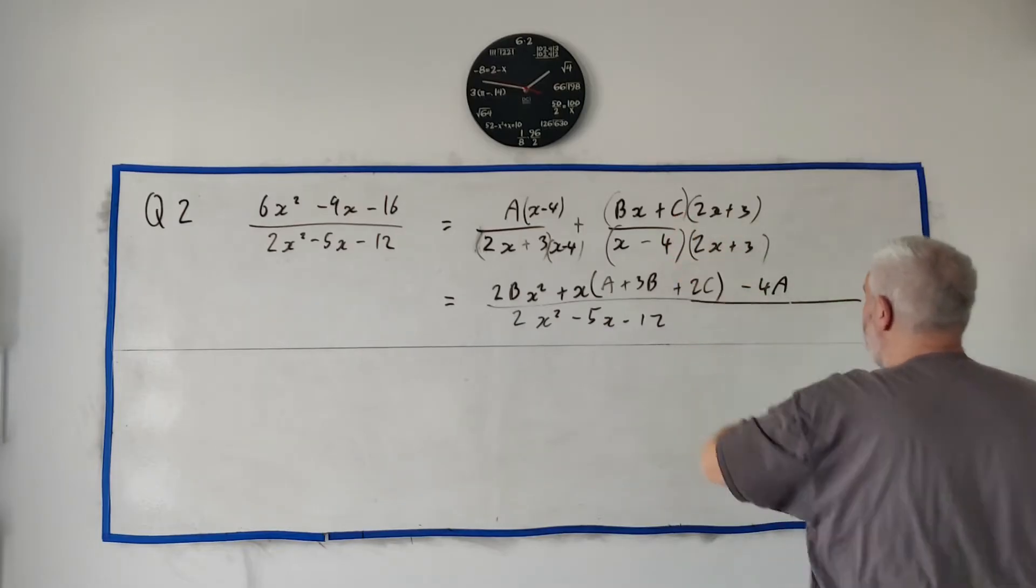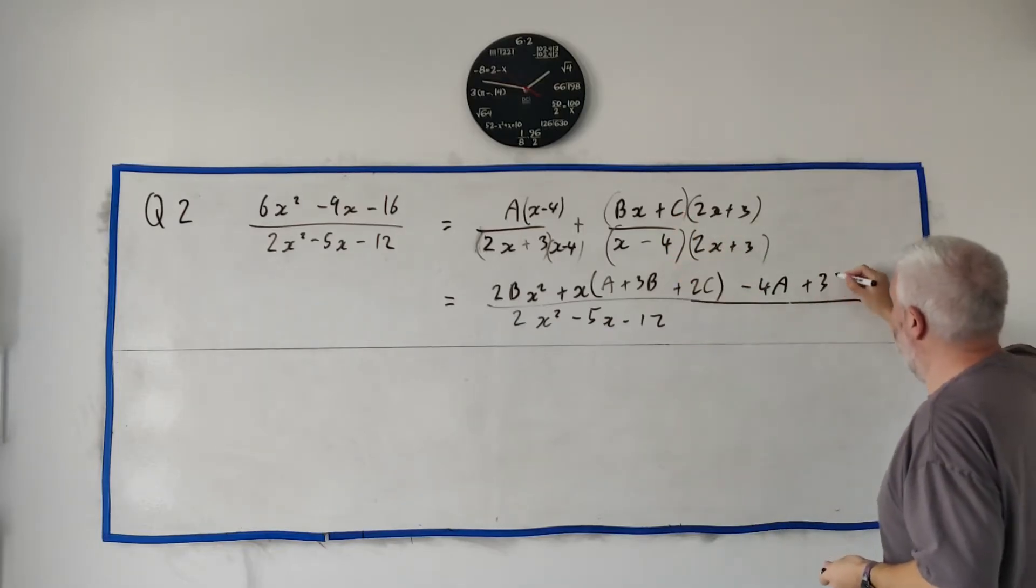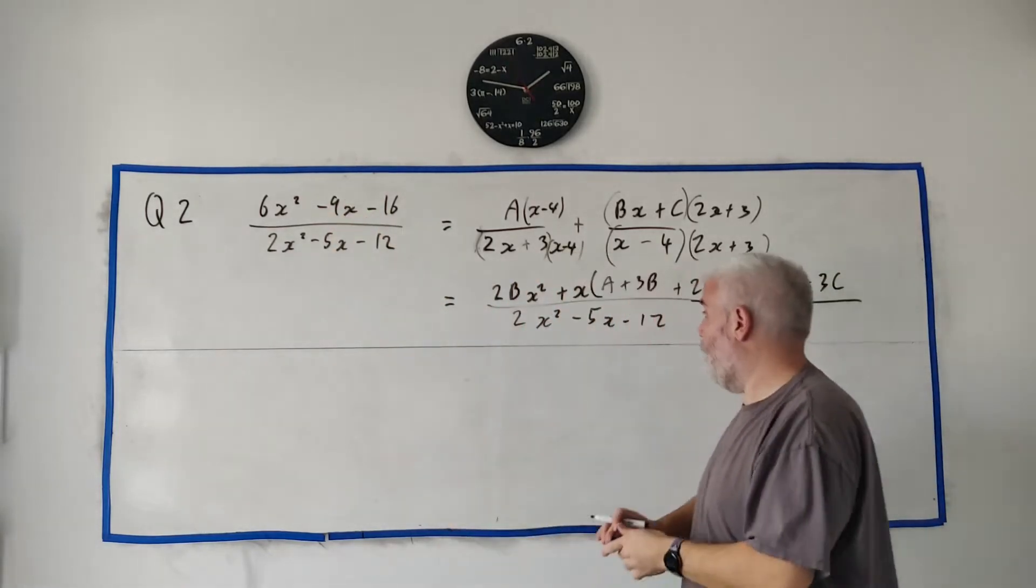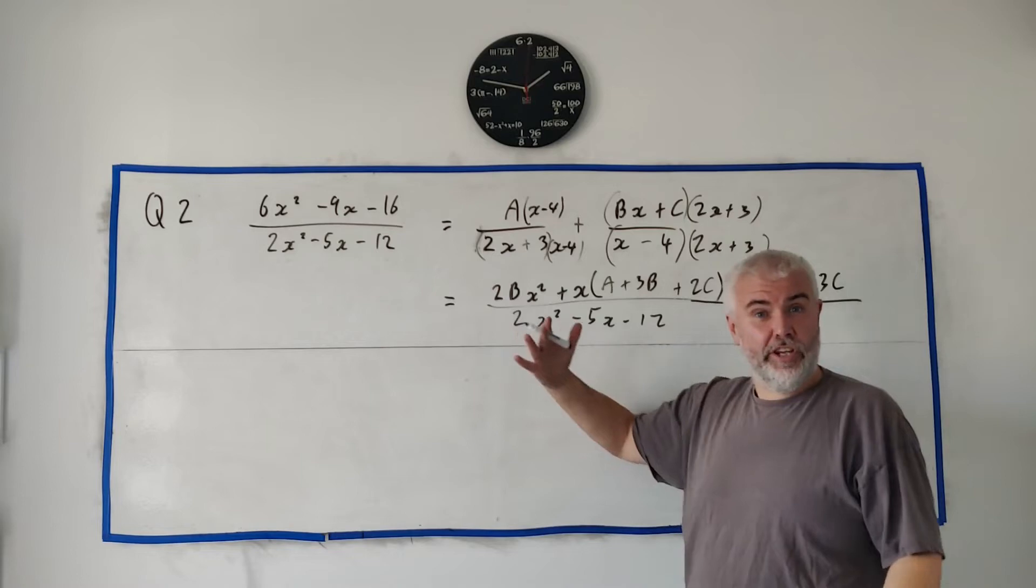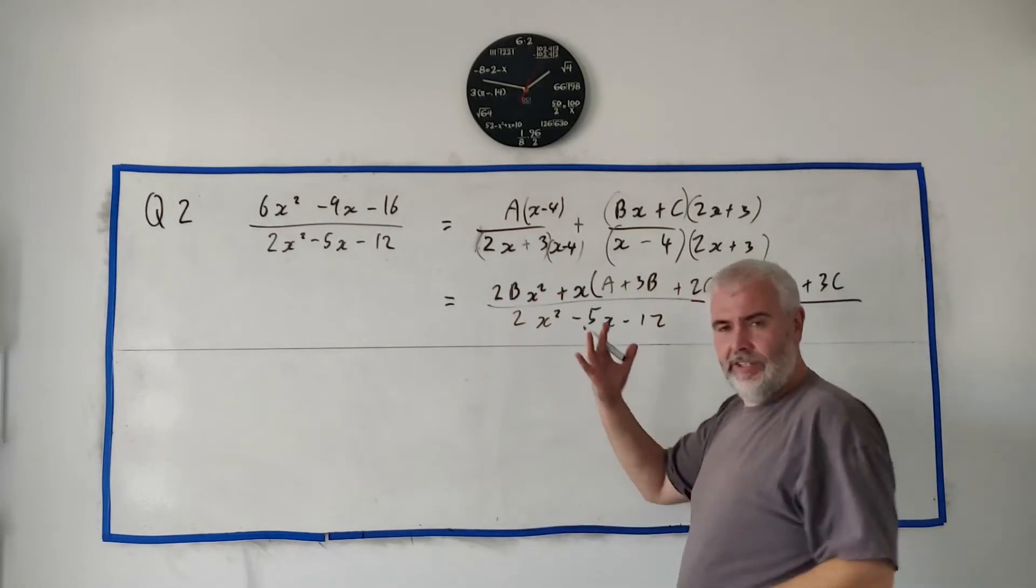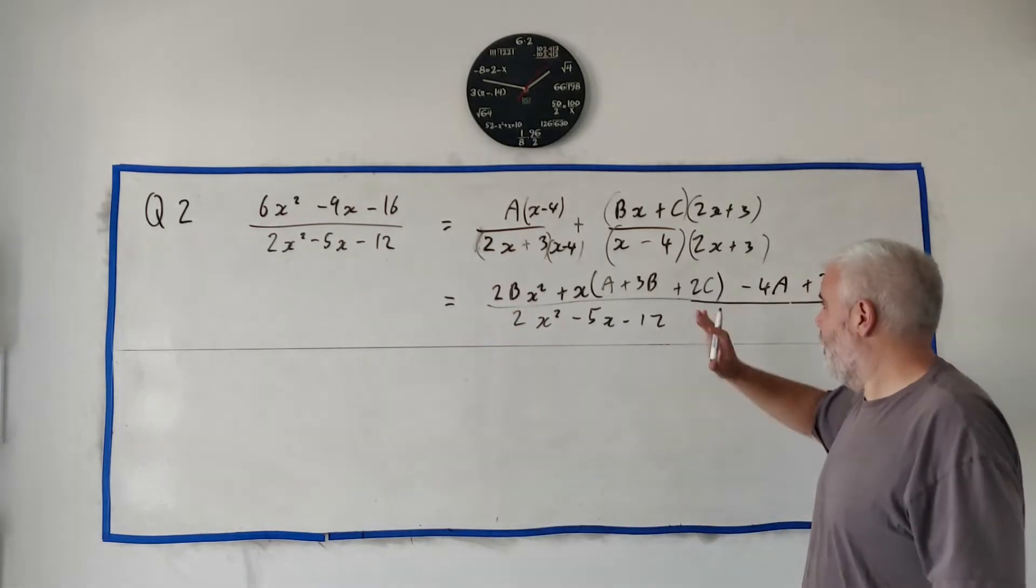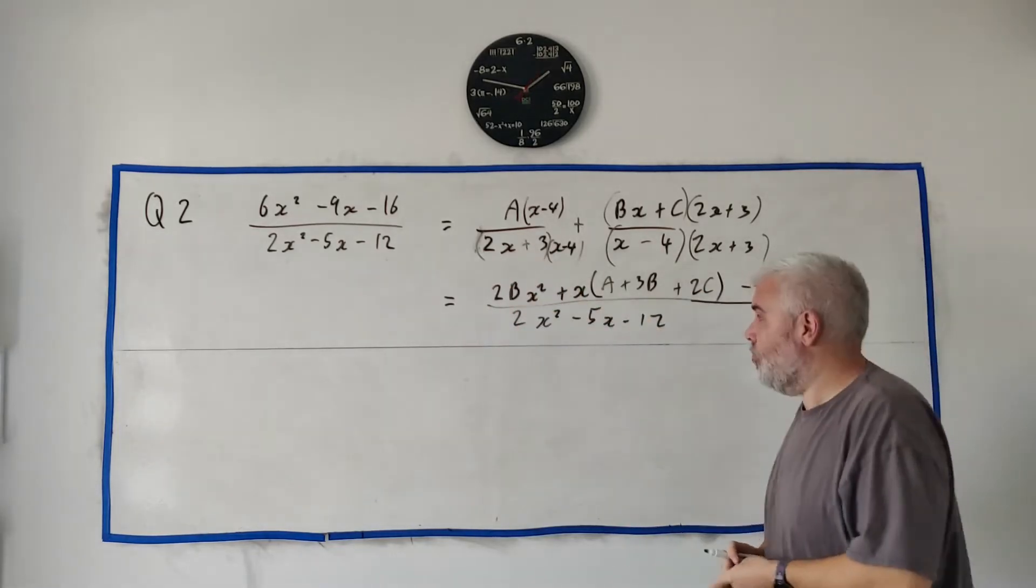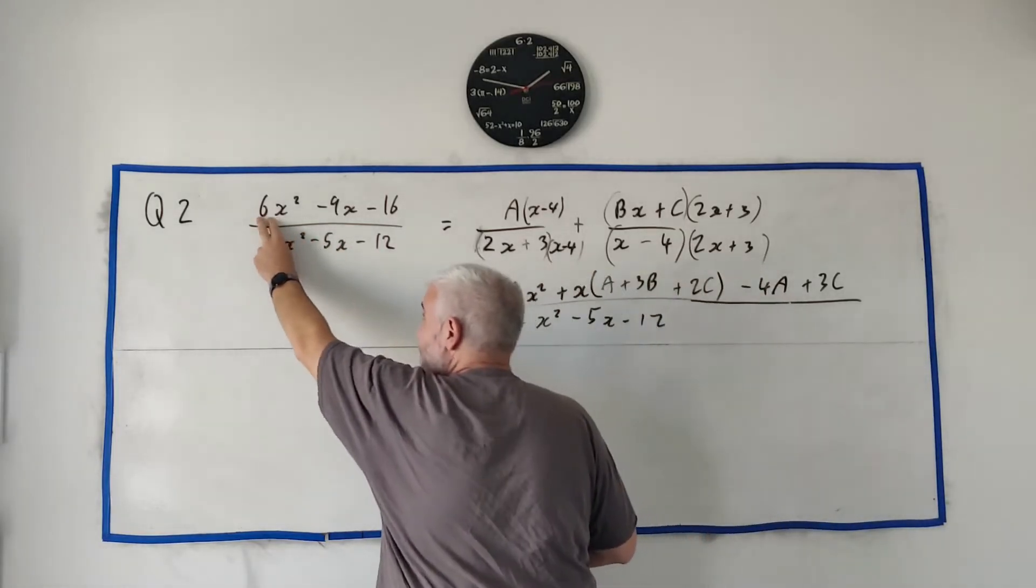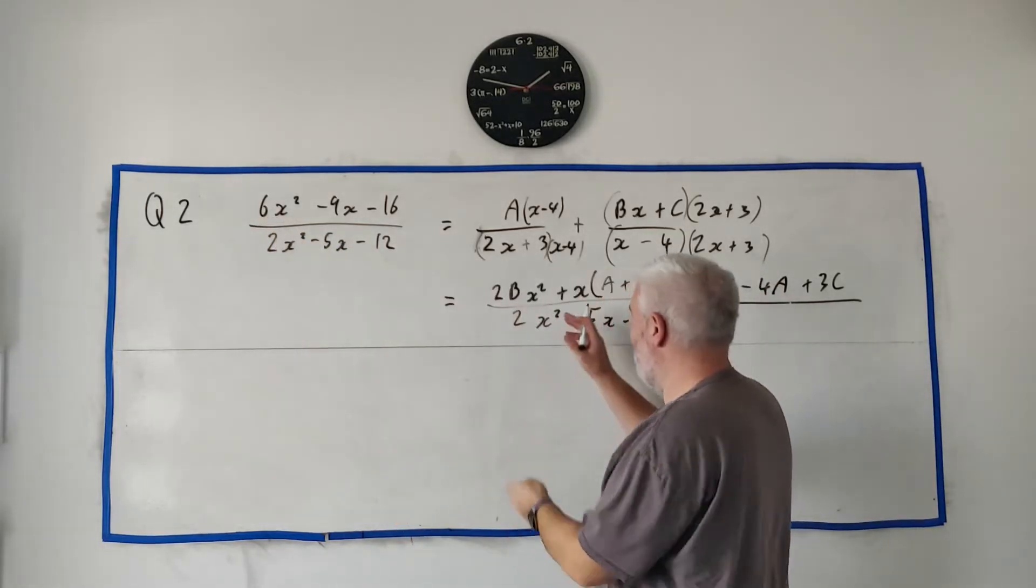And 3 times C, plus 3C. But these equalities are, this still equals this over here. The bottom rows are the same. So the top rows must be the same. And that just means whatever is in the X squares have to equal the X squares. The Xs have to equal the Xs. So that just means whatever is in front of this X squared must be the same as this. So we end up getting lots of things here.